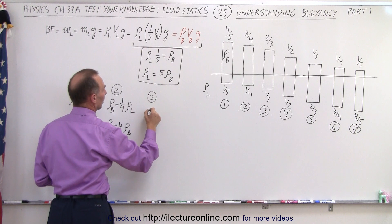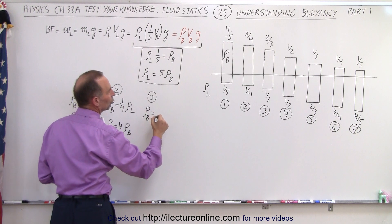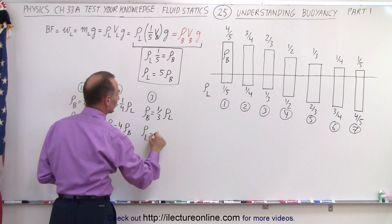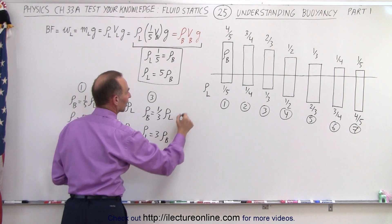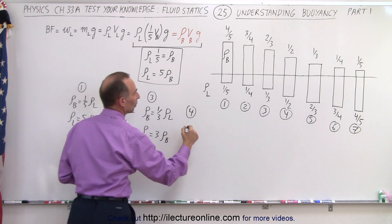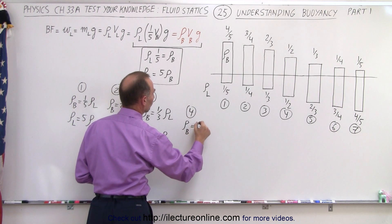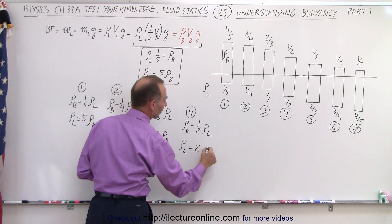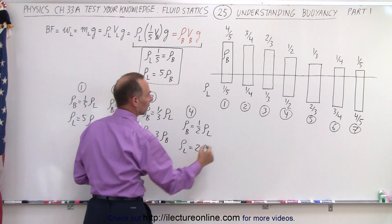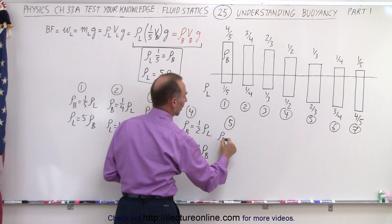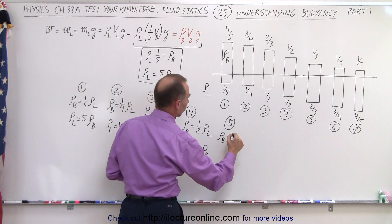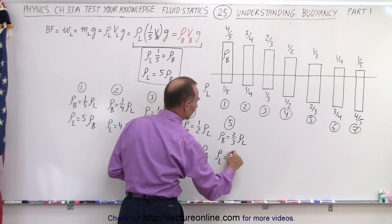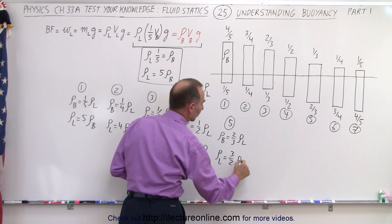In case number three, the density of the block is equal to one-third the density of the liquid, or the density of the liquid is equal to three times the density of the block. In case number four, the density of the block is equal to one-half the density of the liquid, or the density of the liquid is equal to two times the density of the block. In case number five, the density of the block is equal to two-thirds the density of the liquid, or the density of the liquid is equal to three-halves the density of the block.